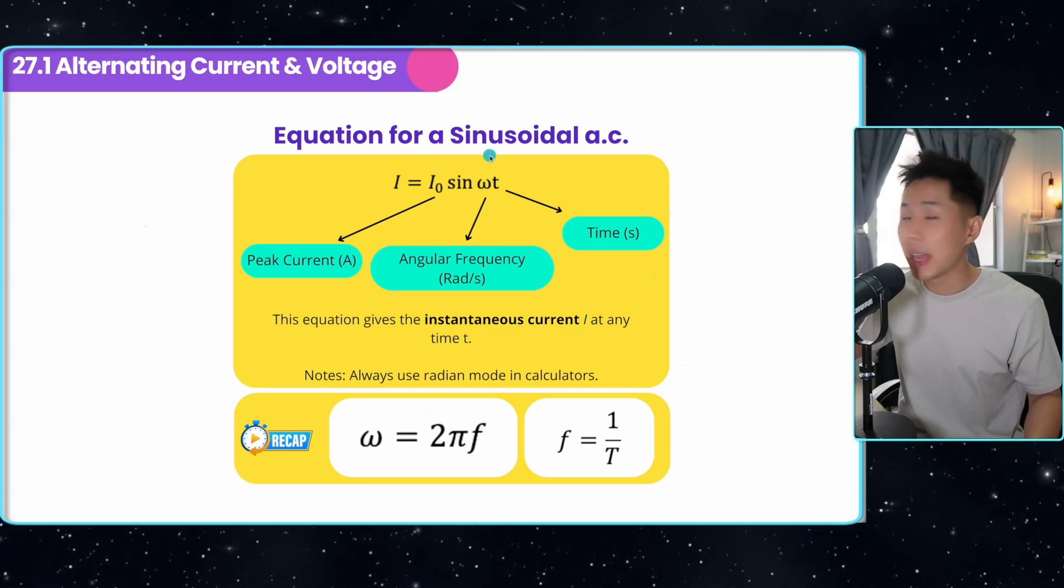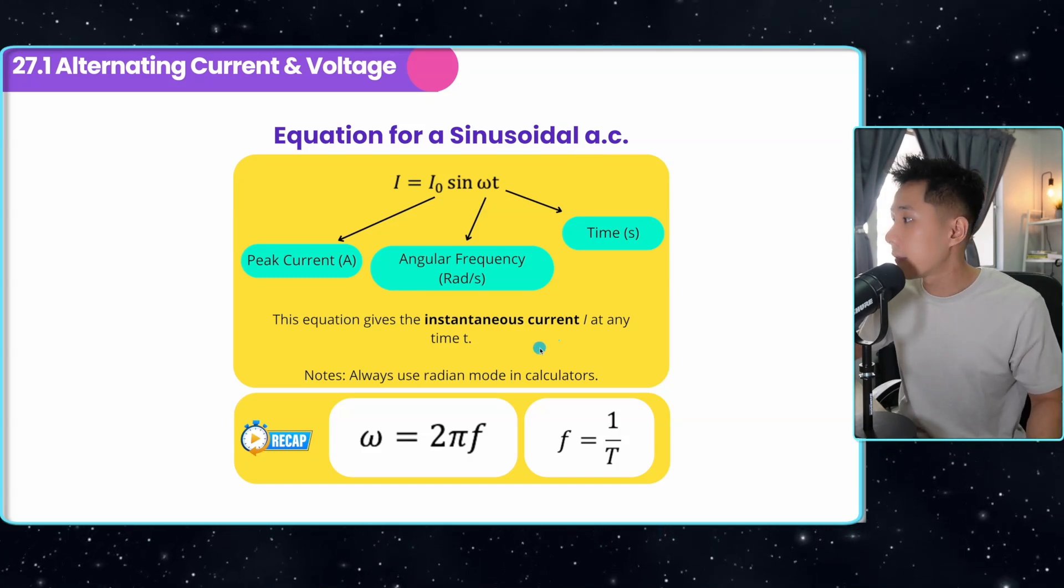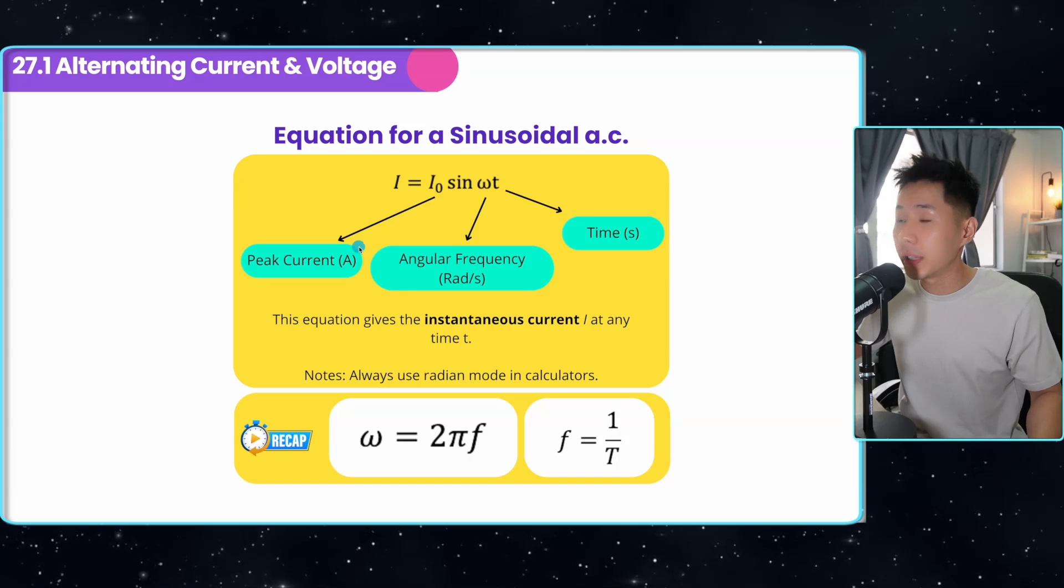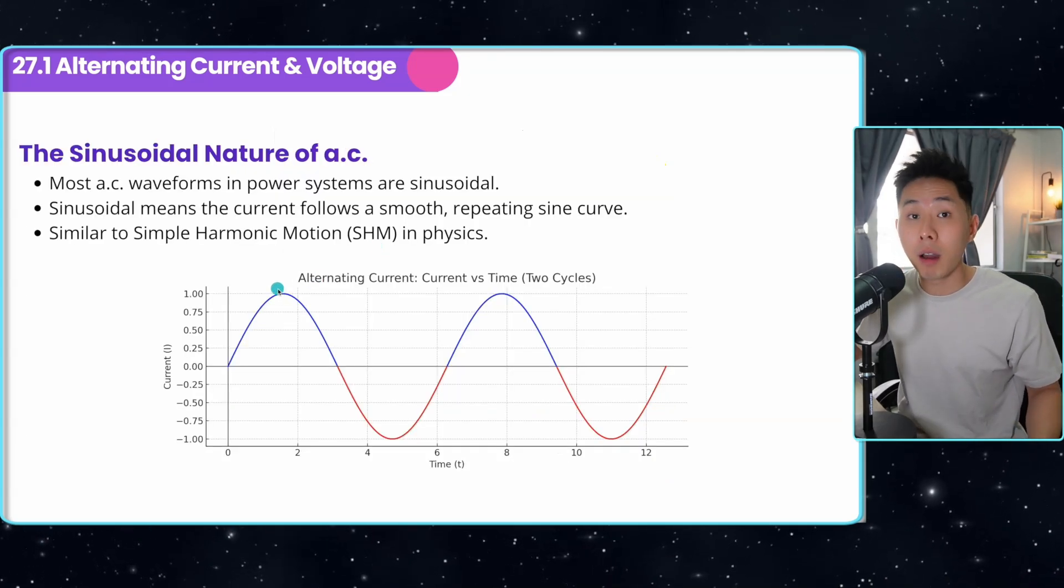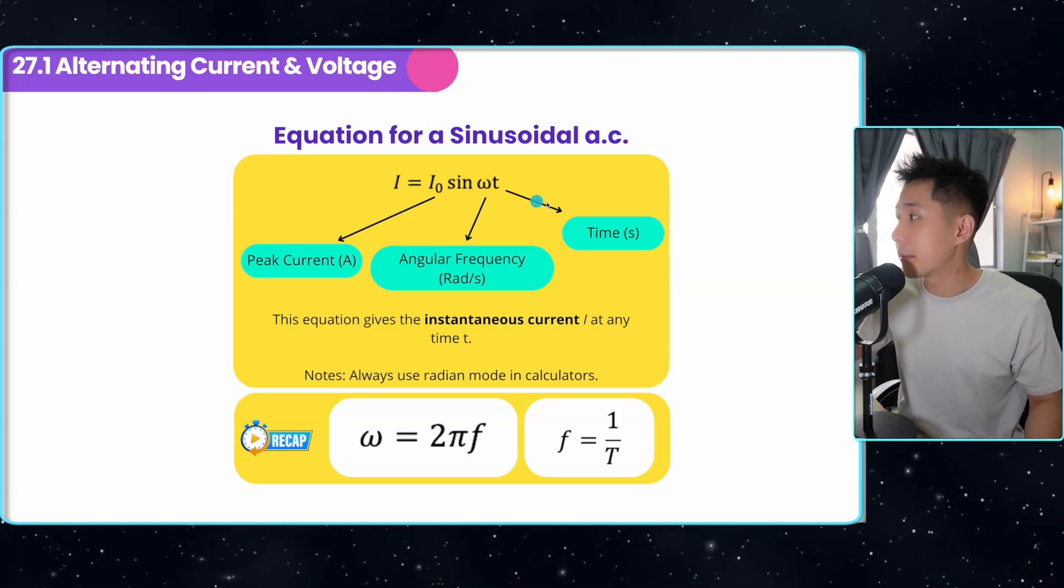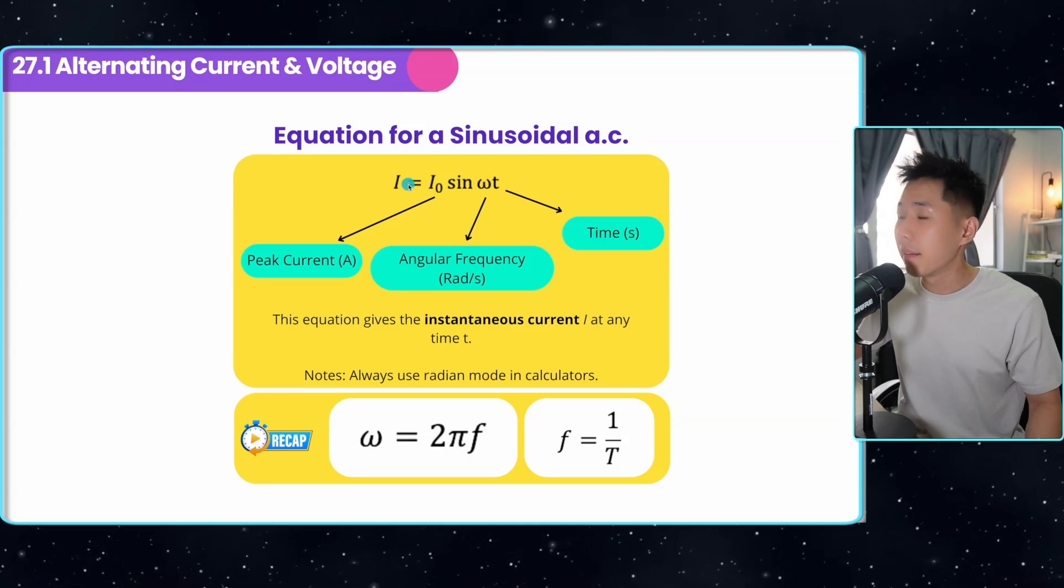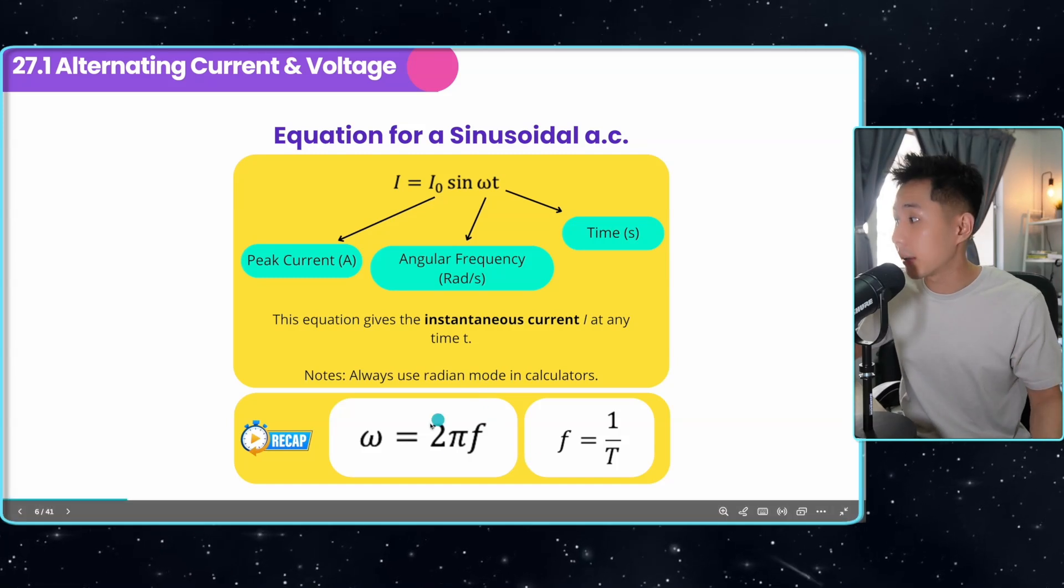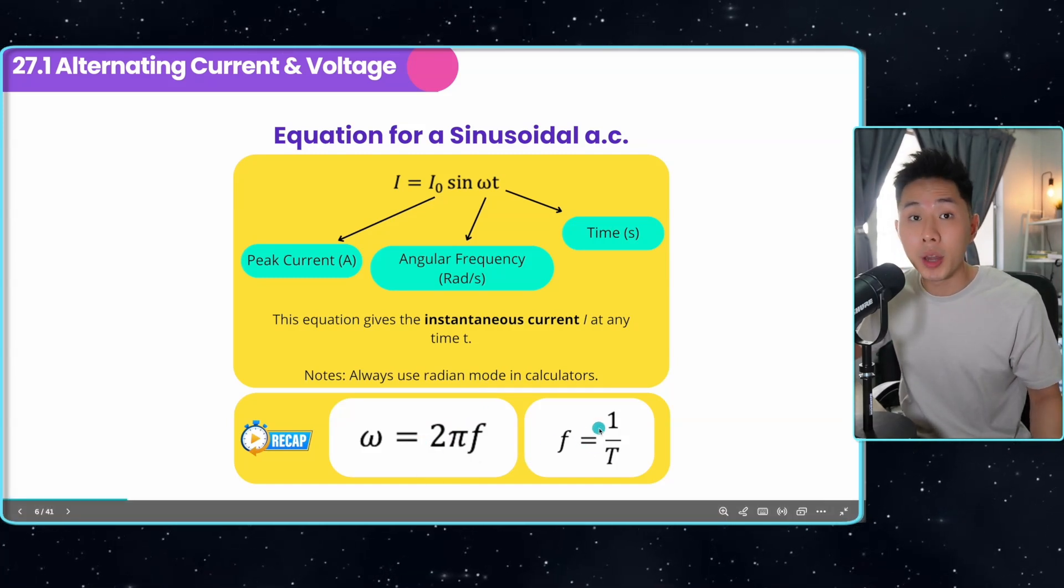And this is when we have an equation for sinusoidal alternating current to help you figure out the instantaneous current. So this is the equation, I₀ is the peak current, which you can also see it as the amplitude of the graph, followed by sine, then angular frequency and time. By substituting all the values, you can find out the current at a particular time. So just a recap on how to calculate angular frequency, and how you can further break down frequency into one over period.